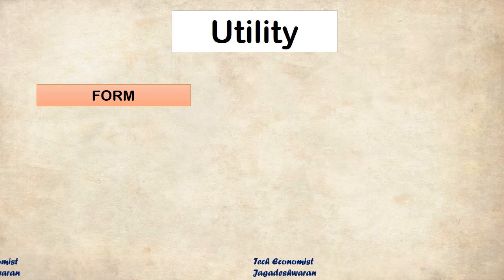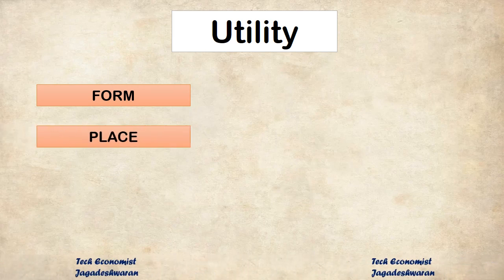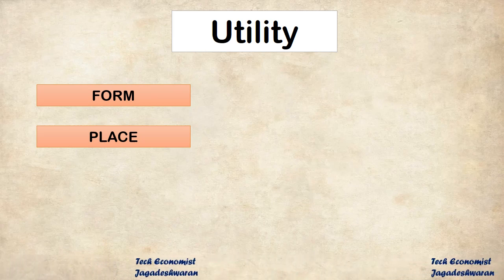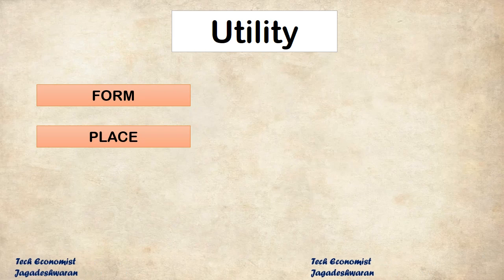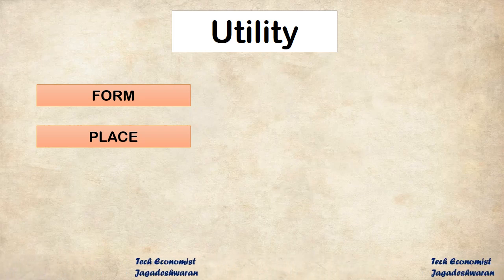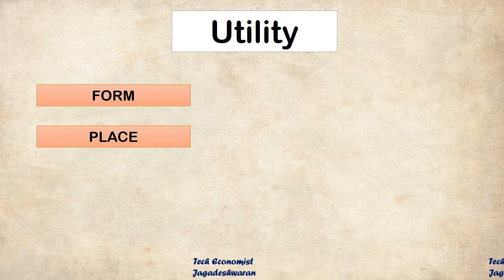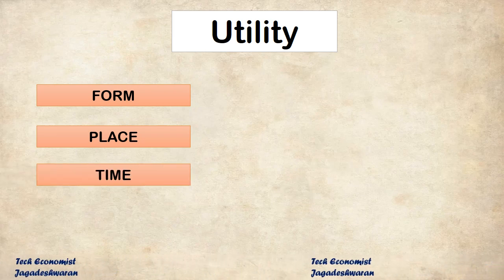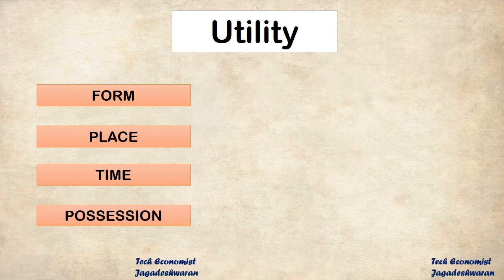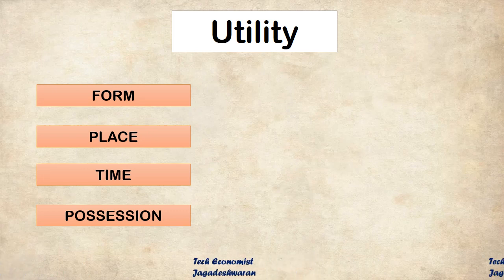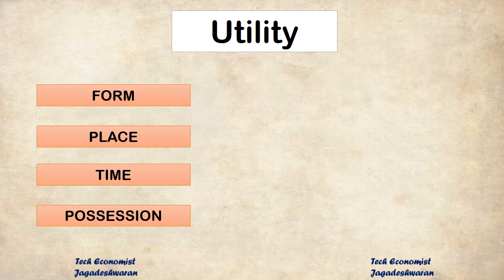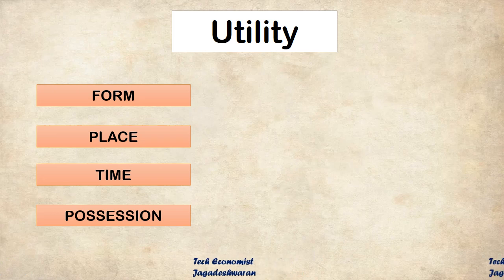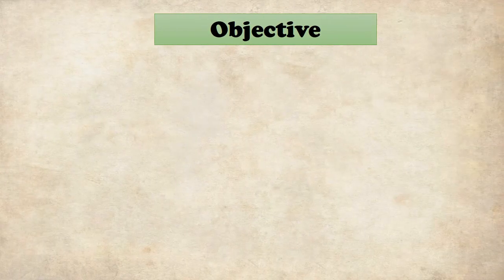Place utility refers to manufactured goods being transferred and imported from one place to another, such as from America to India — the transportation involved comes under place utility. Time utility refers to commodities stored for a year or more as buffer stocks, creating time utility. Position utility refers to ownership transfer — for example, if I have three tons of paddy and I sell it to someone else, the ownership transfers, which is position utility.